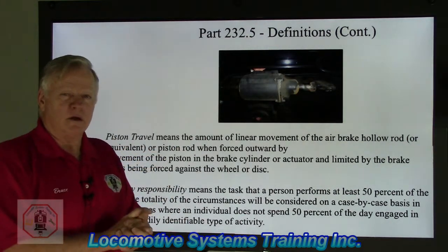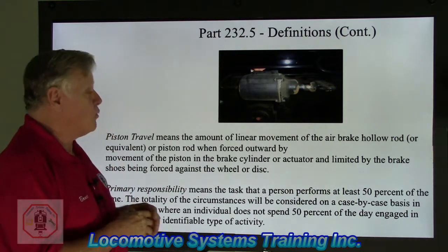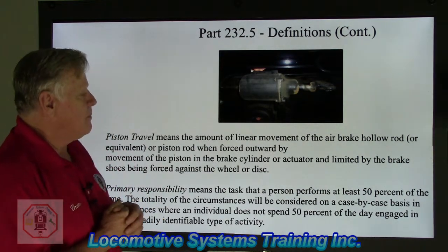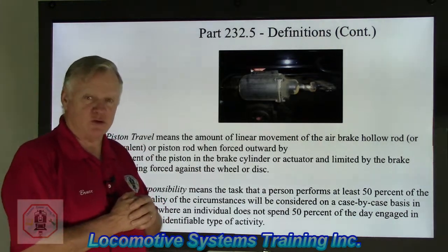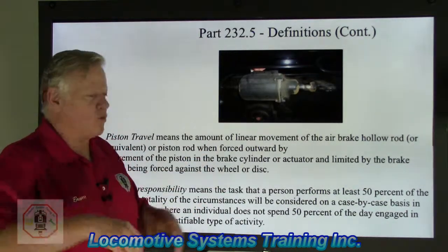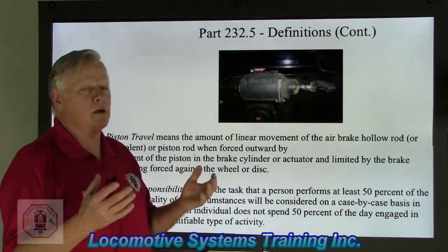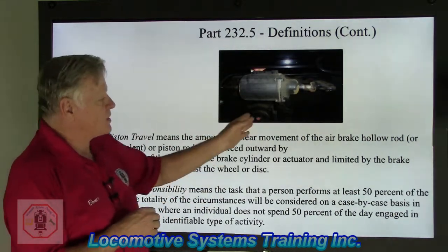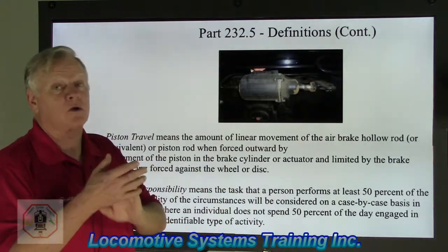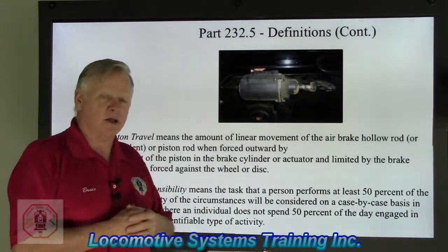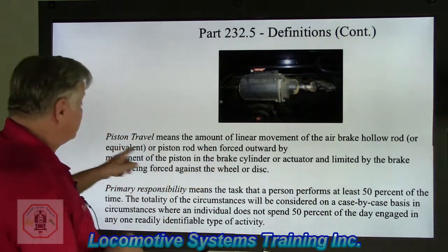So piston travel — there are a lot of things involved in the determination of how much piston travel there is. We're going to get into that later on. The FRA rule uses about an inch and a half less than total possible piston travel of that cylinder. The more worn out the equipment is, you have to compensate or adjust for this wear between piston pins and levers and beams and rod and brake shoe wear and wheel wear down there at the brake slack adjuster. You adjust for that wear to keep this piston travel within limits.